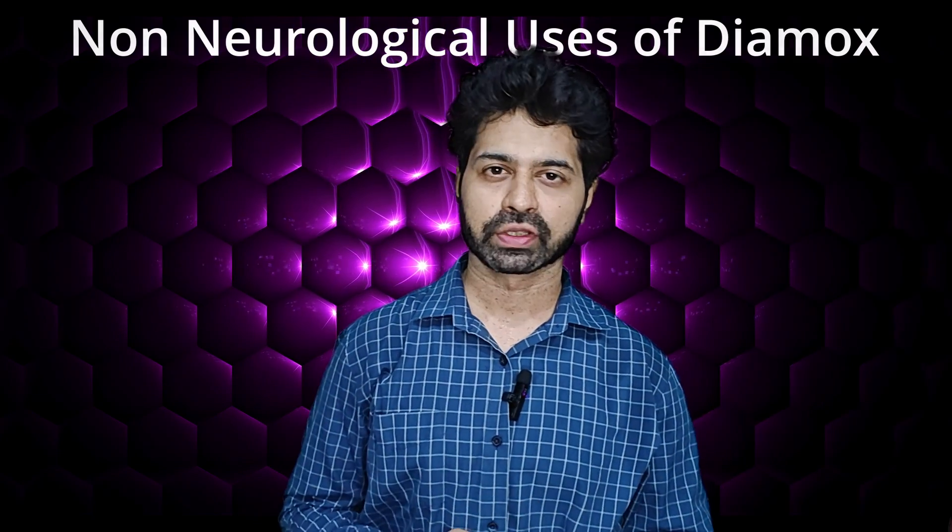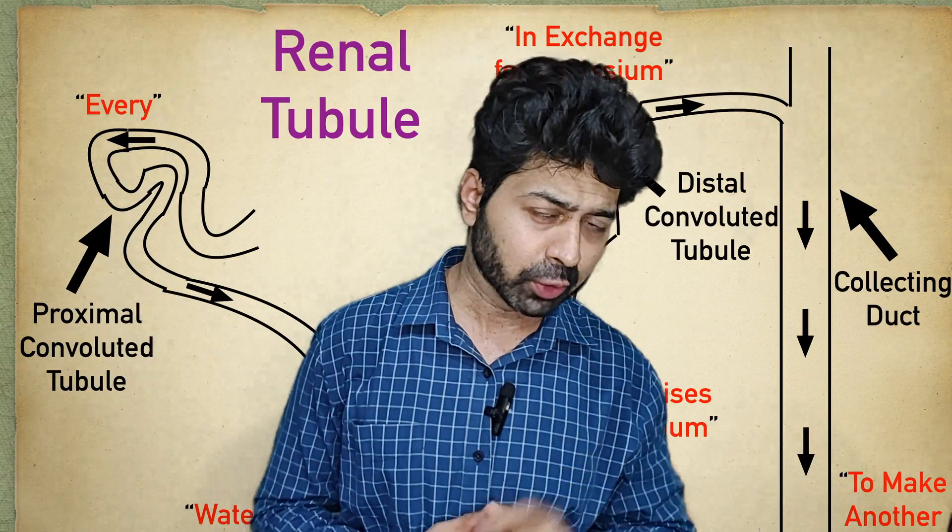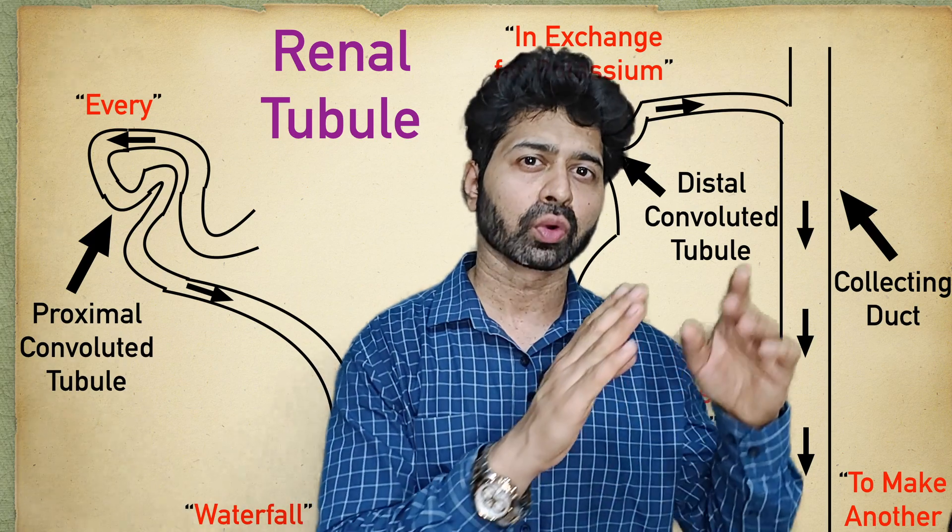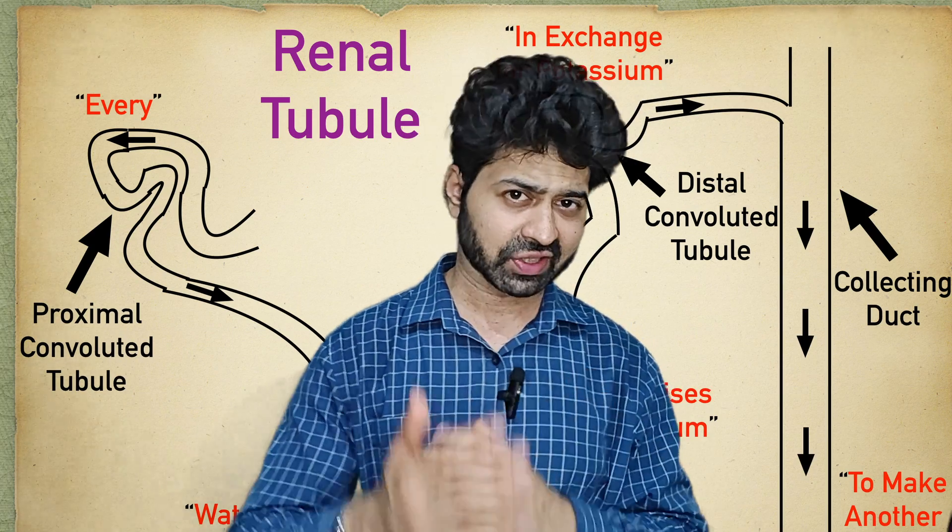Now let's look at the non-neuro uses of Diamox. As a diuretic, it increases urine output. Normally inside the renal tubular system, CO₂ + H₂O forms bicarbonate and H⁺, and H⁺ is exchanged for sodium, so sodium is reabsorbed along with water. When Diamox inhibits this reaction, reabsorption of sodium and water does not take place, resulting in increased urine output — hence it is a diuretic.